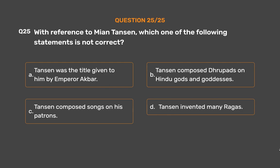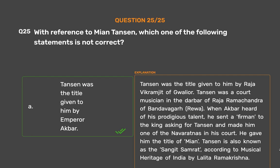The correct answer is Option A: Tansen was the title given to him by Emperor Akbar — this is incorrect. Tansen was the title given to him by Raja Vikramajit of Gwalior. Tansen was a court musician in the Darbari of Raja Ramchandra of Bandavagadh, Rewa. When Akbar heard of his prodigious talent, he sent a request to the king asking for Tansen and made him one of the Navaratnas in his court. He gave him the title of Mia. Tansen is also known as the Sangeet Samrat, according to Musical Heritage of India by Lalita Ramakrishna.